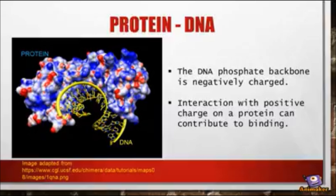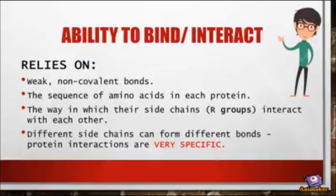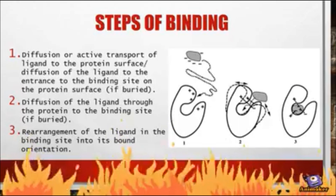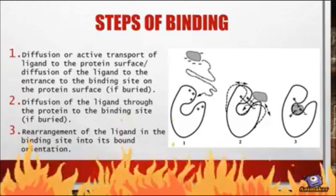Protein-DNA binding can occur when there is interaction between the negatively charged DNA and positive charges on the protein binding site. Interaction relies on non-covalent bonding through the side chains of amino acid residues. Let's look at the steps of protein binding.